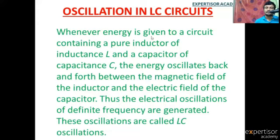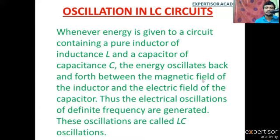When energy is given to a circuit containing a pure inductor of inductance L and a capacitor of capacitance C, the energy oscillates back and forth between the magnetic field of the inductor and the electric field of the capacitor.